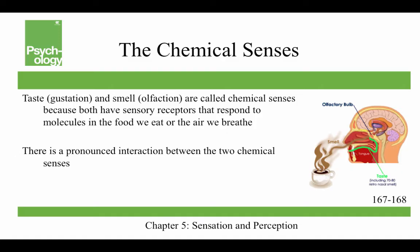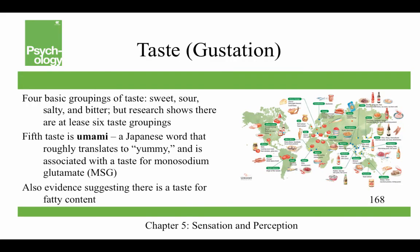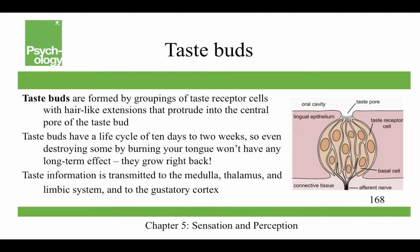Taste and smell are called the chemical senses because they both have sensory receptors that respond to molecules in the food we eat or the air we breathe. There is a pronounced interaction between these two senses — that's why you can't taste things very well when you have a cold. Taste (gustation) has four basic groupings: sweet, sour, salty, and bitter, but research shows there are at least six. The fifth is umami, a Japanese word roughly translating to 'yummy,' associated with monosodium glutamate (MSG), and there's also evidence for a taste for fatty content. Taste buds have a life cycle of about 10 days to two weeks, so burning your tongue won't have any long-term effect.